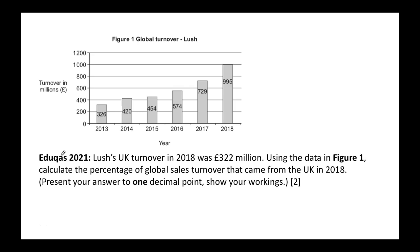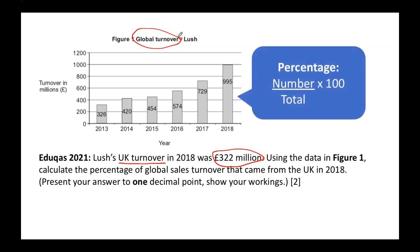This past paper question is about Lush, the cosmetics brand. Some key information: UK turnover/revenue in 2018 was 322 million. What they want you to do is calculate the percentage of global sales turnover that in 2018 came from the UK. We've got to remember that percentage is the smaller number over the total number — in this case the global turnover is the total.